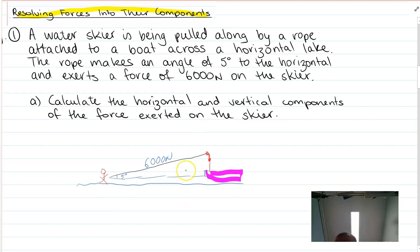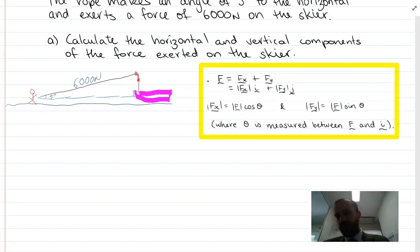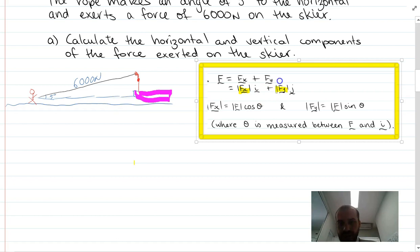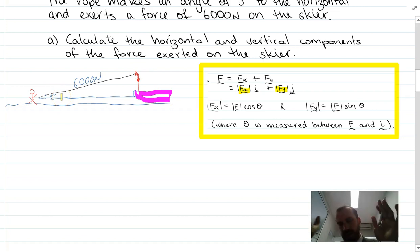At its heart, this is just a trigonometry question. Notes to take here: total force, this is our 6000 newtons, is going to be equal to the force in the x-axis plus the force in the y-axis. So F equals Fx plus Fy. We can say that's equal to the magnitude in the i-axis plus the magnitude in the j-axis.